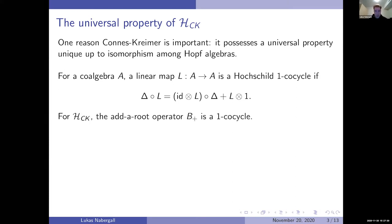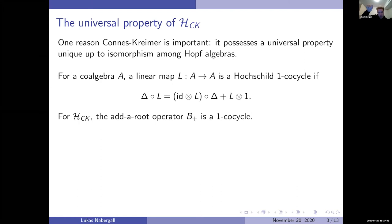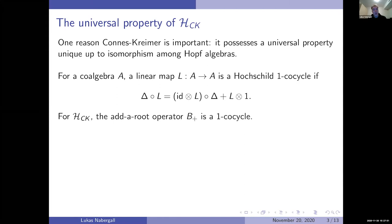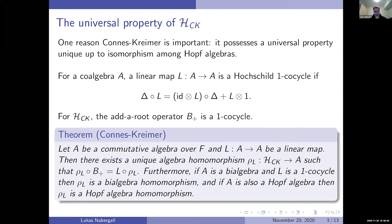The Connes-Kreimer 'add a root' operator — the operator that takes a bunch of trees and adds a root, sticking each tree as a child of that root — is a 1-cocycle. You can check that the equation is satisfied.